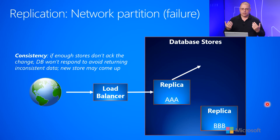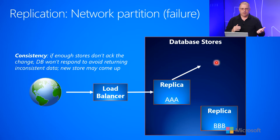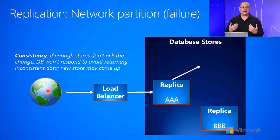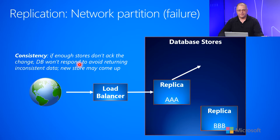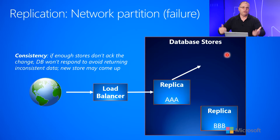So what do we do? You have two options. The first option, if you care about consistency: if enough replicas don't acknowledge the change, the database can decide not to respond, or respond with failure to the client, saying the data was not changed to BBB — to avoid returning inconsistent data. The hope is that in the future another replica might come up, join the network, and we can retry this operation to get the state fully replicated with BBB.